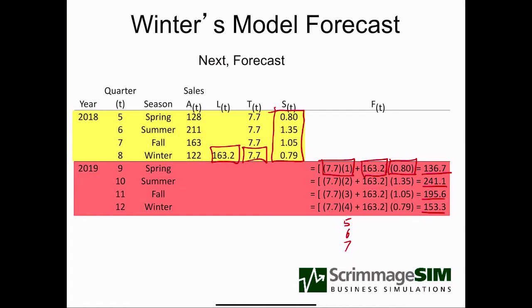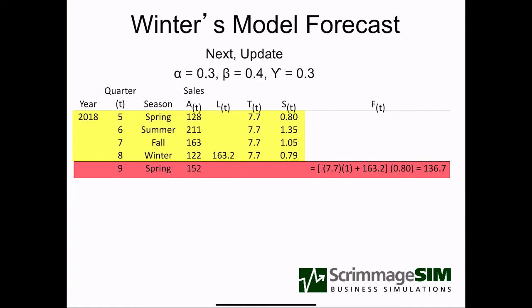Where the model differs is once we get some real data for spring of 2019, we'll be able to update the model, and that will give it its adaptive characteristic. Now suppose we are in 2019 and we have our first spring sales value of 152. We compare that to our forecast of 136.7 and realize we have under-forecast fairly significantly. So what we need to do is update our level, our trend, and our seasonal factor so that going forward we have a model that more matches our current data.